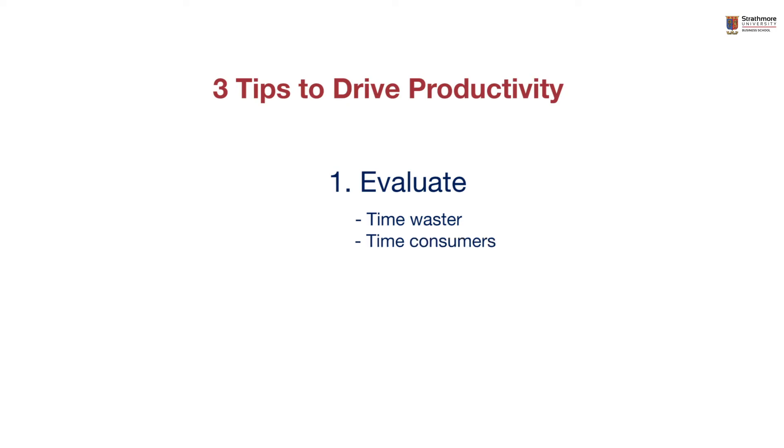The other thing is to look at productivity stoppers. A productivity stopper could be something like an approval required for you to proceed to the next level, because it will naturally slow you down or bring your productivity to a halt as you wait, making you waste time. When you evaluate, you can clearly see what is easy to eliminate.